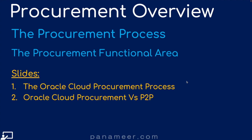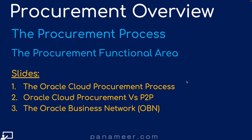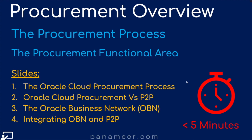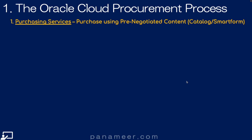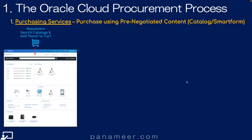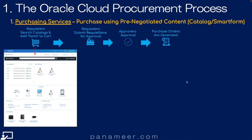The Oracle Cloud Procurement Process. Let's walk through the procurement process — 14 steps in detail. First, purchasing services. A requester starts by searching catalogs and adding items of pre-negotiated content to their cart. Those requesters then submit those carts for approval. Approvers approve, and a purchase order is manually or automatically generated. The supplier gets the purchase order, ships the goods, and those goods are received or services confirmed.